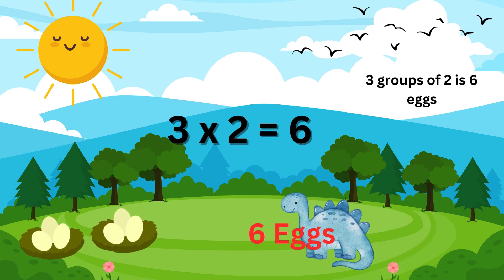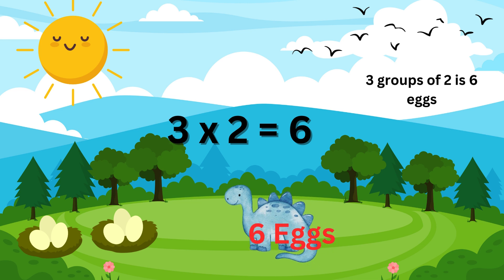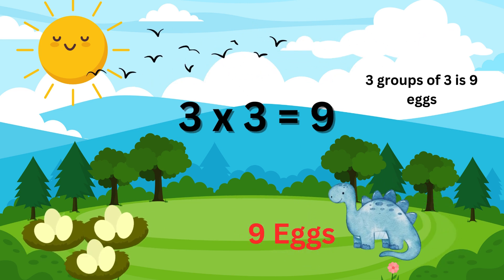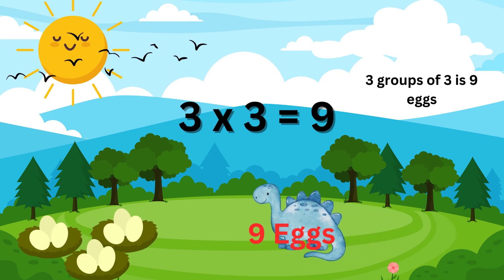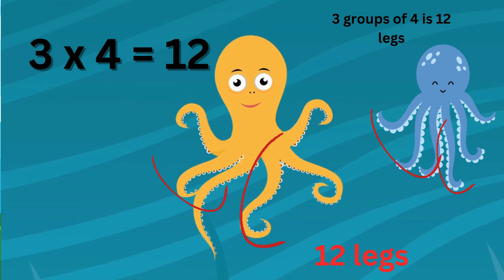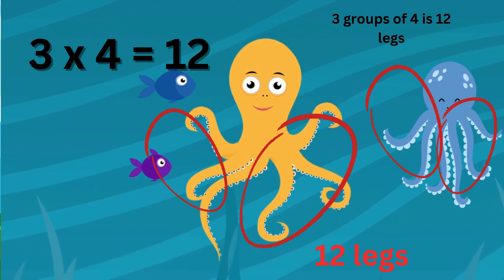3 times 2 is 6, they are 6 eggs. 3 times 3 is 9, they are 9 eggs. 3 times 4 is 12, they are 12 legs.